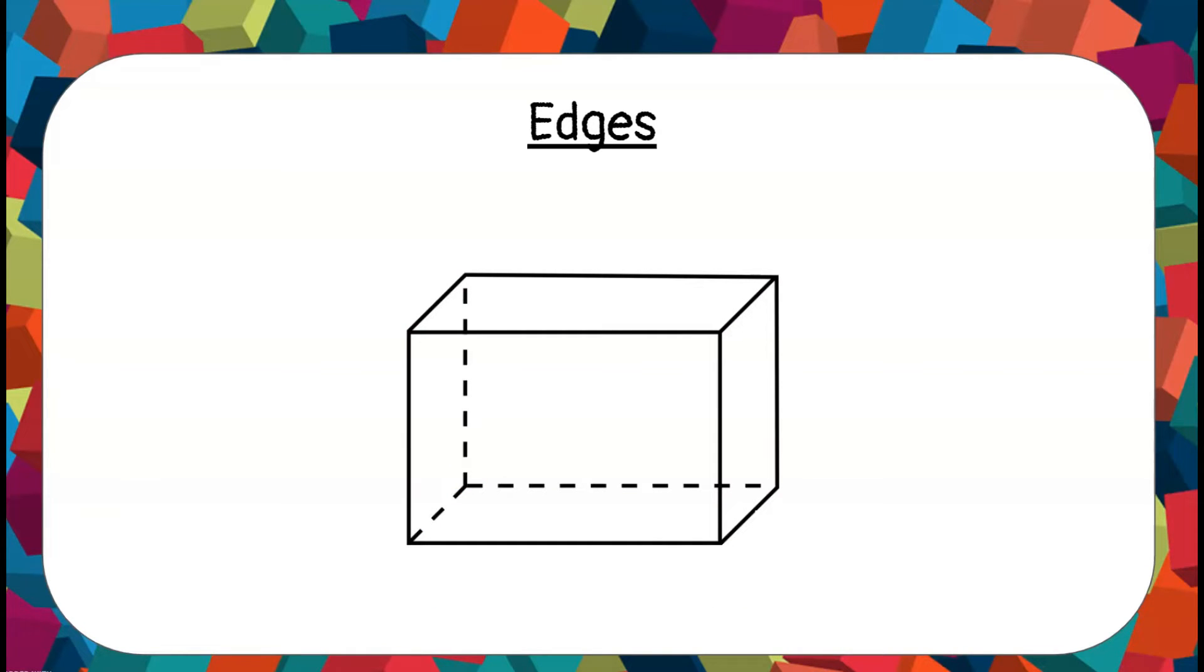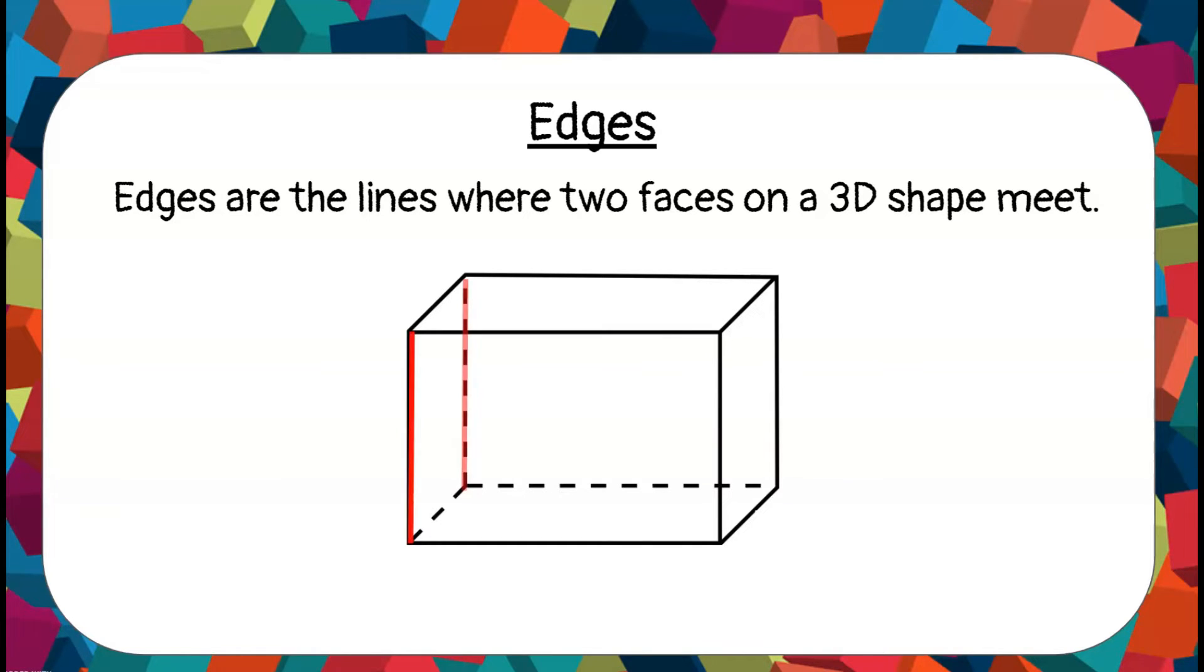Now let's see about the edges of a 3D shape. The edges are the lines where two faces on a 3D shape meet. Shall we count the edges of the cuboid together? 1, 2, 3, 4, 5, 6, 7, 8, 9, 10, 11, 12. So this cuboid has 12 edges.